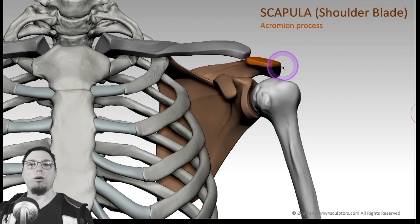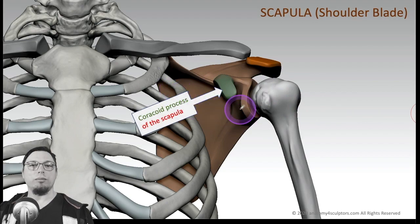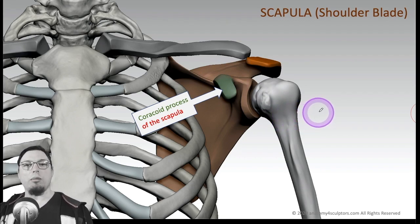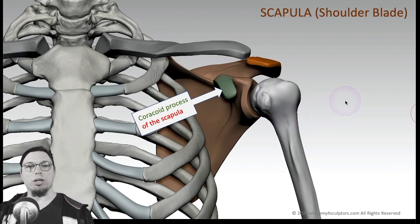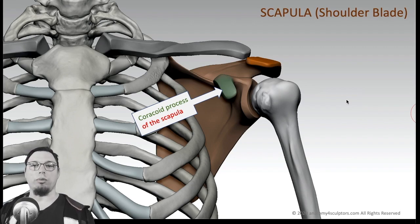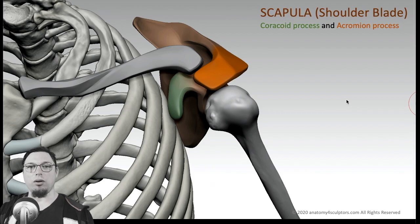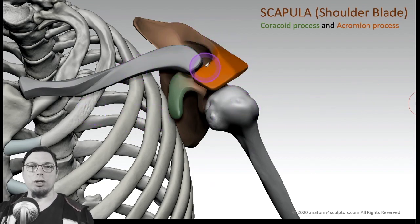The acromion process is like a roof which hangs over the humerus. There is another bone called the coracoid process — another small protrusion, hook-shaped. It is very important to discuss these two bony landmarks: the coracoid process and the acromion process. From those two elements of the scapula originate some very important muscle tendons. From this view you can see both the coracoid process and the acromion process going around.